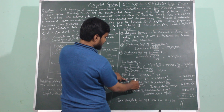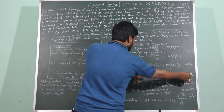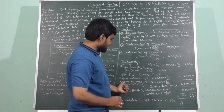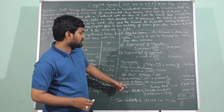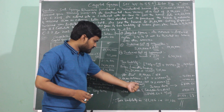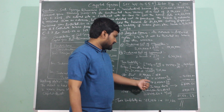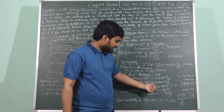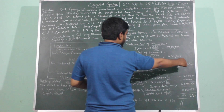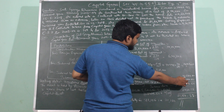Next slab: Rs. 2,50,001 to Rs. 5,00,000 — income of Rs. 2,50,000 taxed at 5% = Rs. 12,500. Next slab: Rs. 5,00,001 to Rs. 10,00,000 at 20%. Since Ganga Bhavani's income from other sources is Rs. 7,05,000, the second slab covers Rs. 5,00,001 to Rs. 7,05,000 — income of Rs. 2,05,000 taxed at 20% = Rs. 41,000. Total income from other sources tax: Rs. 41,000 + Rs. 12,500 = Rs. 53,500.